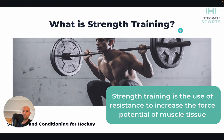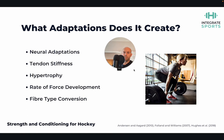In terms of strength training adaptations, there are numerous. Neural adaptations allow a greater number of motor units to be recruited in order to exert muscular force, making us more efficient at expressing force. Tendon stiffness is also an adaptation — a stiffer tendon is less compliant, meaning we can express and recycle forces through tendons much more effectively, which translates to sprinting, change of direction, and other high-intensity actions on the pitch.